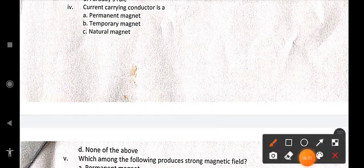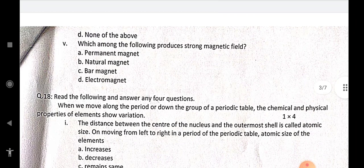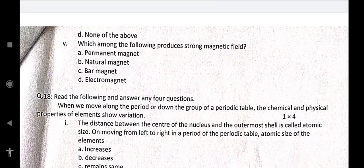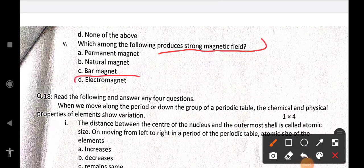Current carrying conductor is a temporary magnet, isn't it? Next. Which among the following produces strong magnetic field? It is electromagnet.